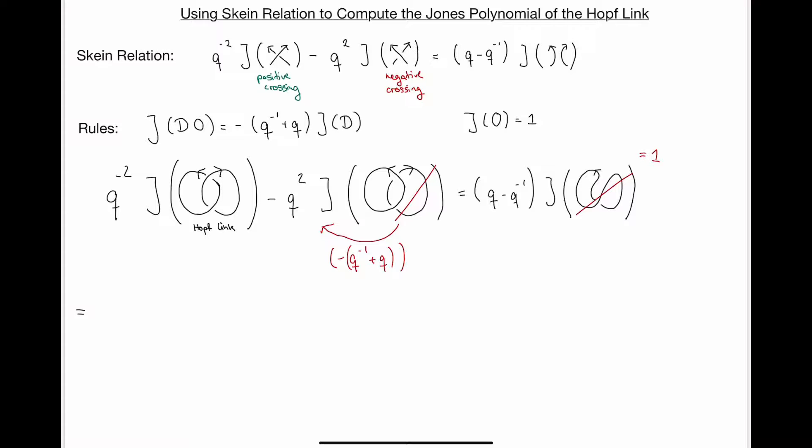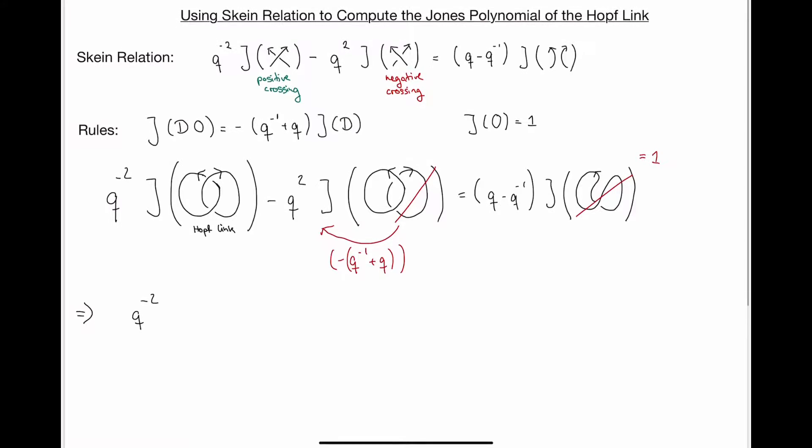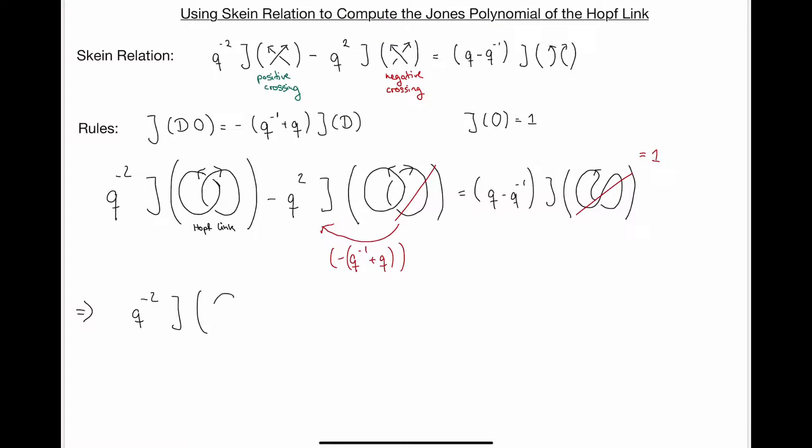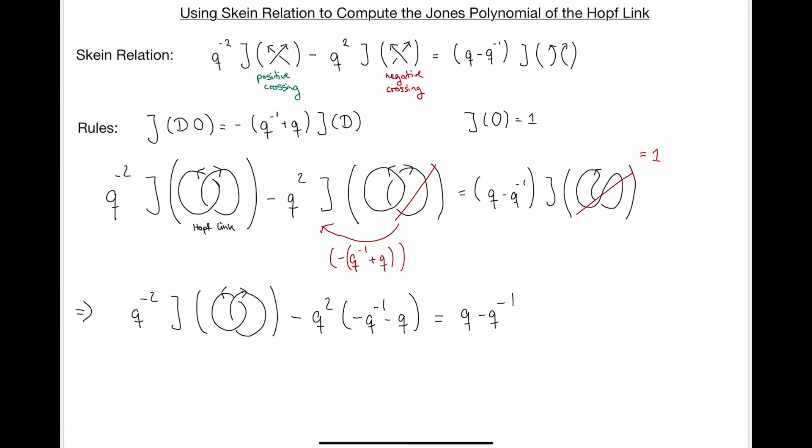Now, what do I get? I get here q to the minus two times the Jones polynomial of the Hopf link, minus q square times minus q inverse minus q. And that is all equal to q minus q inverse. So now we're in the situation where we just have the Jones polynomial of the Hopf link in this equation and variables otherwise. So we can solve now for the Jones polynomial of the Hopf link and be done with it.